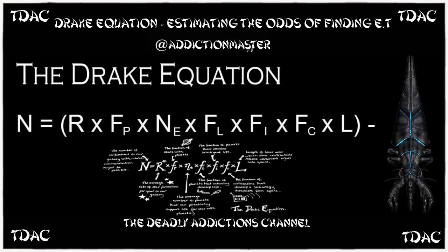It's usually written, according to SETI, as: N equals the number of civilizations in the Milky Way galaxy whose electromagnetic emissions are detectable; R, the rate of formation of stars suitable for the development of intelligent life; fp, the fraction of those stars with planetary systems; ne, the number of planets per solar system with an environment suitable for life; fl, the fraction of suitable planets on which life actually appears; fi, the fraction of life-bearing planets on which intelligent life emerges; fc, the fraction of civilizations that develop a technology that releases detectable signs of their existence into space.